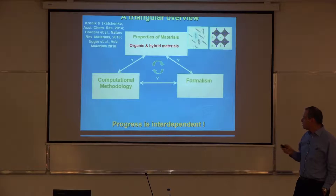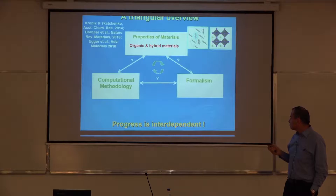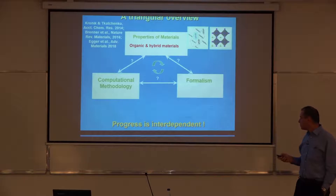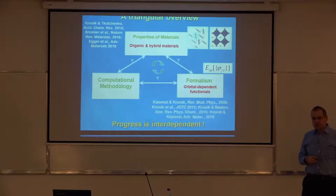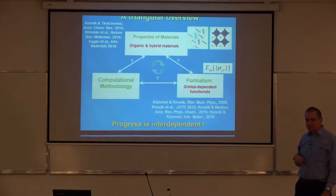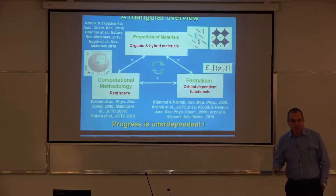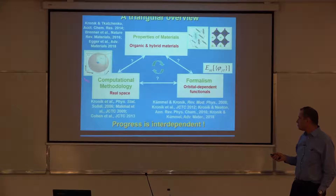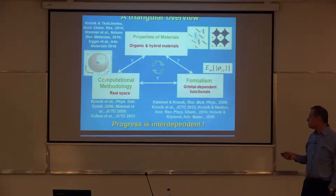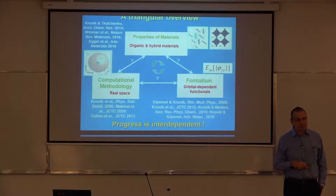These are generally the three corners, and progress is interdependent because sometimes new properties challenge the formalism, new formalism enables new properties, but also demands new computational methodologies. In our group, on properties of materials, we've been focusing in recent years on organic and hybrid materials. On the formalism, we've been focusing on what's known as orbital dependent functionals in density functional theory. On computational methodology, we are developing real space methods — solving equations directly on a real space grid and not by expansion to some basis set — which has advantages for very large-scale machines for the next generation of computing.